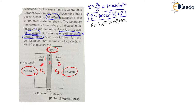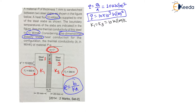As heat flows through the circuit, each slab offers some resistance. The thermal resistance offered by a slab is R = b / (kA), where b is the thickness, k is the thermal conductivity, and A is the area perpendicular to heat flow. For slab 1 and 3, b = 20 mm; for slab 2, b = 1 mm. The perpendicular area A is the same for all slabs.